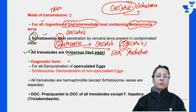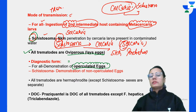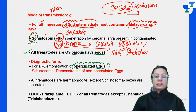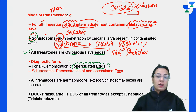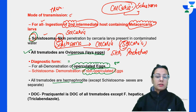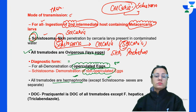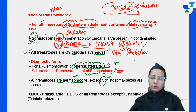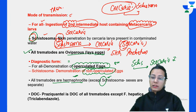Exception: Schistosoma has non-operculated eggs. One exception among cestodes: Diphyllobothrium latum has operculated eggs as its diagnostic form. Schistosoma forms an exception everywhere - it has cercaria as infective form, skin penetration as mode of transmission, non-operculated eggs, and sexes are separate. All other trematodes are hermaphrodite with sexes not separate. The drug of choice is praziquantel - but for Fasciola, the drug of choice is triclabendazole.